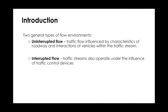The second type is interrupted flow — a traffic stream that operates under the influence of traffic control devices. This doesn't only mean traffic signals; it could be a stop sign, or a sign indicating pedestrians are crossing. Arterials and urban roadways are examples of interrupted flow. In this course, we're going to cover both of these kinds of flow to some extent.